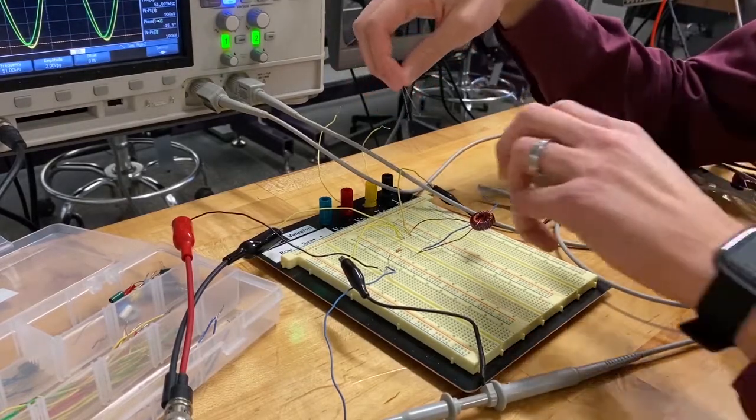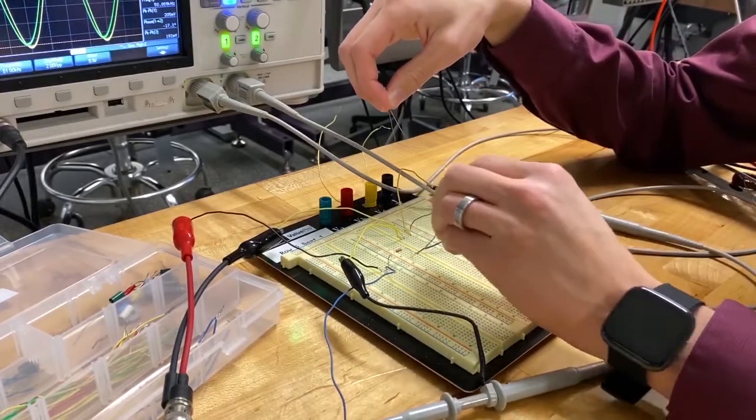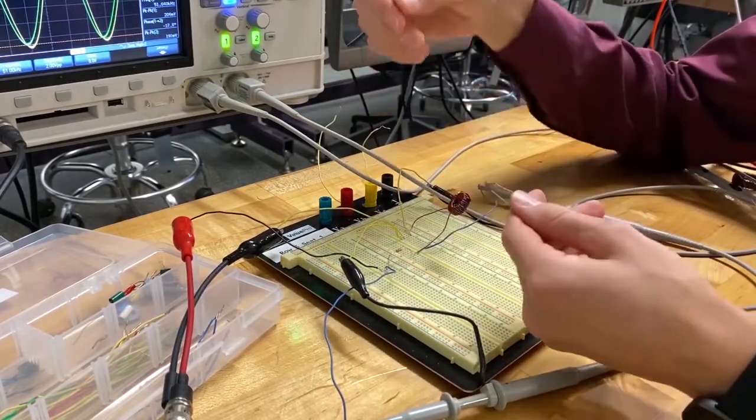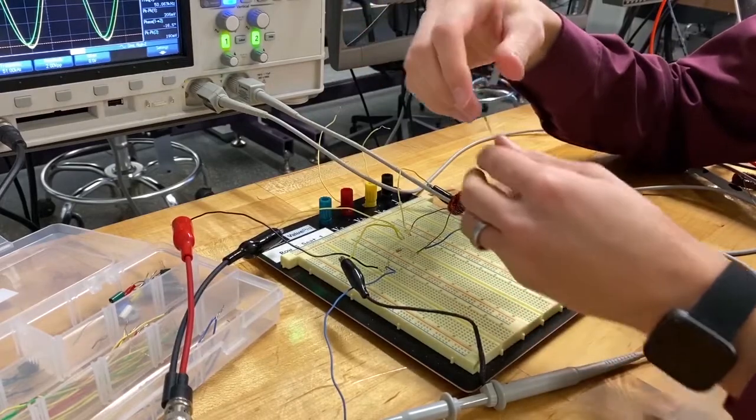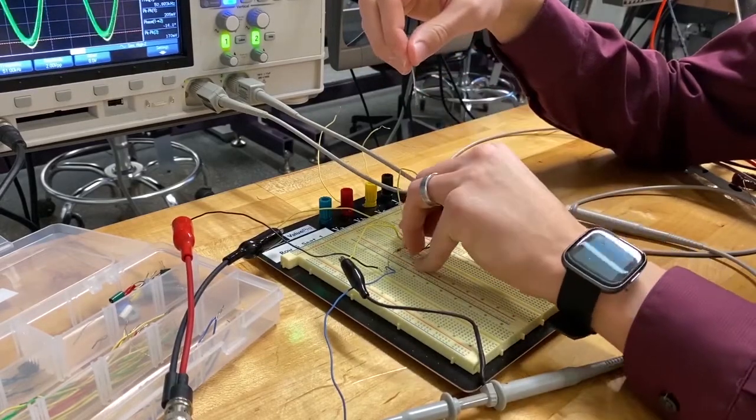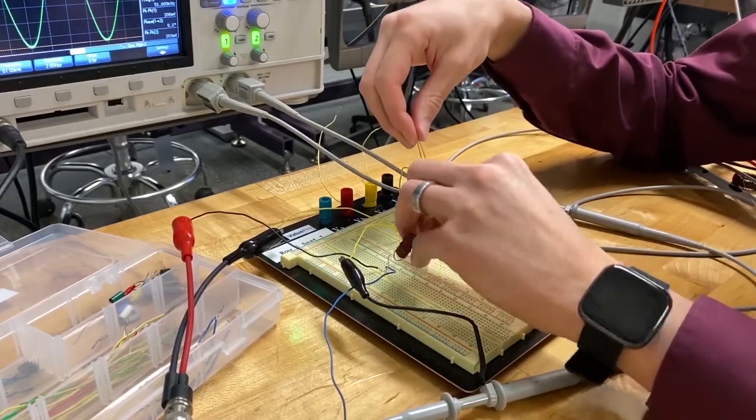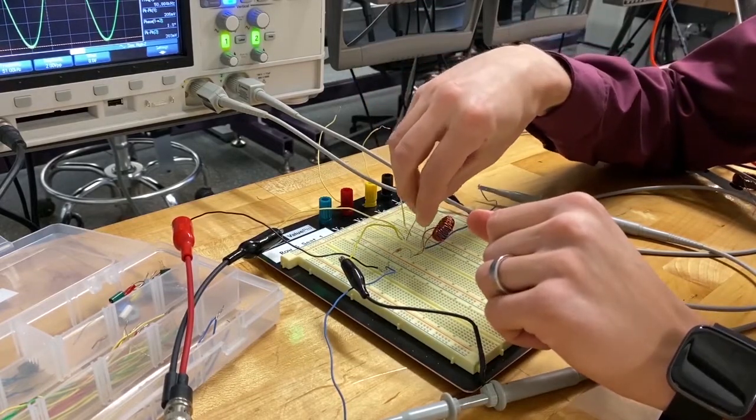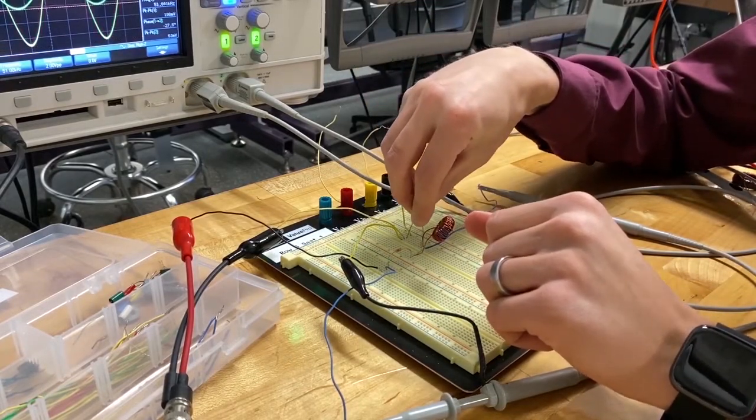So what we're going to do now is we're going to take our circuit that we made last time, this RL circuit, and we're going to add a capacitor to the system. And we're going to start off by breaking our circuit and just putting this capacitor in series with everything else.